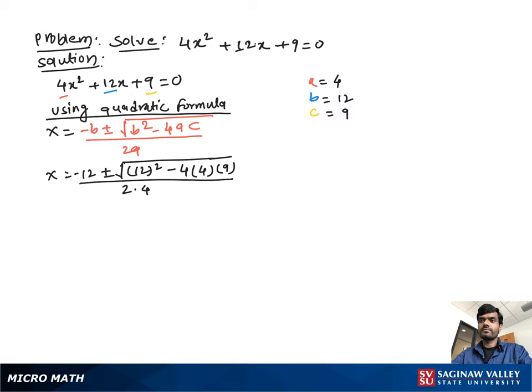Then, we get x equal to negative 12 plus minus square root, 12 square is 144 minus 4 times 4 times 9 is equal to 144, over 2 times 4 is equal to 8.